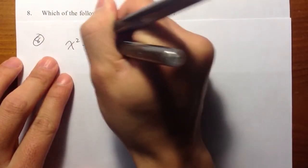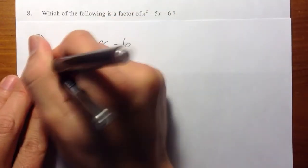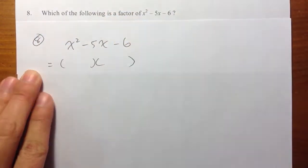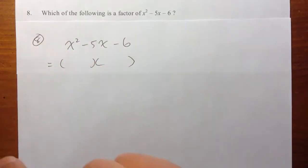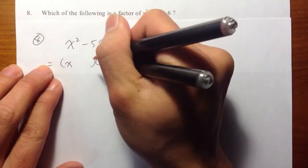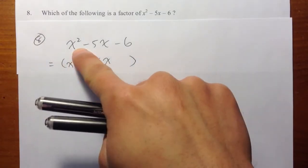I have x squared minus 5x minus 6. Let me get ready by putting two parentheses first. Start off with the x squared, and of course I'm going to put x and x because x times x will produce the x squared.